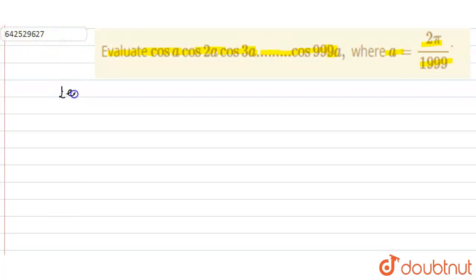First of all, let P equal cos a cos 2a cos 3a up to cos 999a. And let Q equal sin a sin 2a sin 3a up to sin 999a.